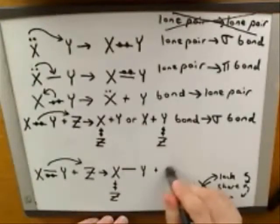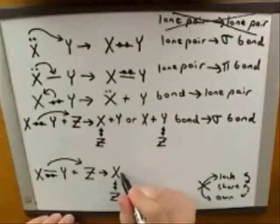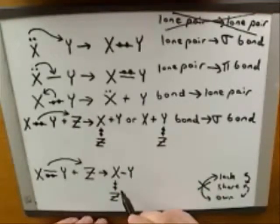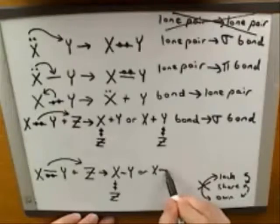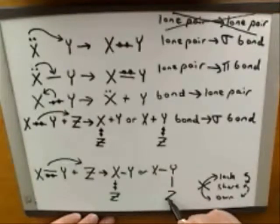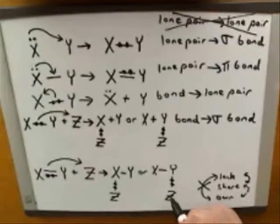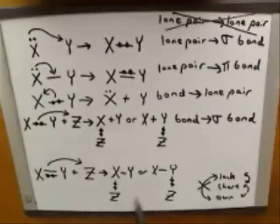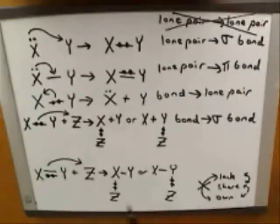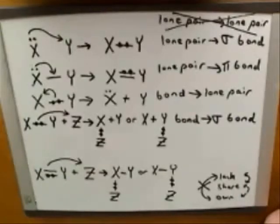One possibility is that Z ends up sharing the electrons with X, and the other possibility is that Z ends up sharing the electrons with Y. As we were discussing, in these very simplified examples, there's really no way to tell which of these is the correct product. When we start looking at real-life examples, sometimes we will be able to tell which is the right product. But in this case, where I'm just using very generic placeholders like X, Y, and Z, all we can say is that one of these is the correct product, but we can't tell which one.